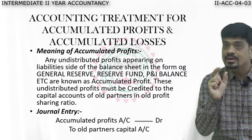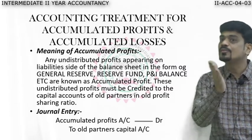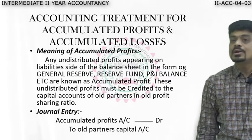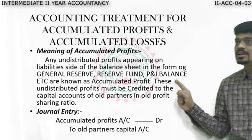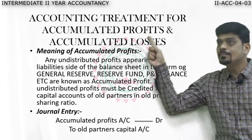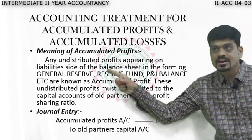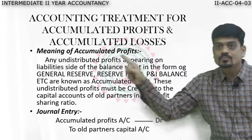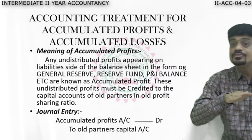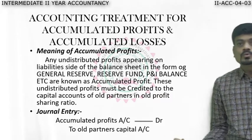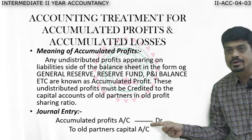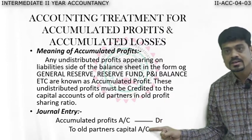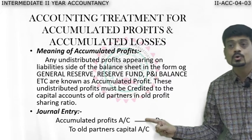Whenever a new partner joins, he has no right to ask for the previous profits. So the old partners will distribute those profits among themselves — compulsorily. These undistributed or accumulated profits, in the form of general reserve, reserve fund, or profit and loss account, must be distributed among old partners in the old ratio. The journal entry is: Accumulated Profits Account debit to Old Partners' Capital Account. This will be account number one when we do the main problem.